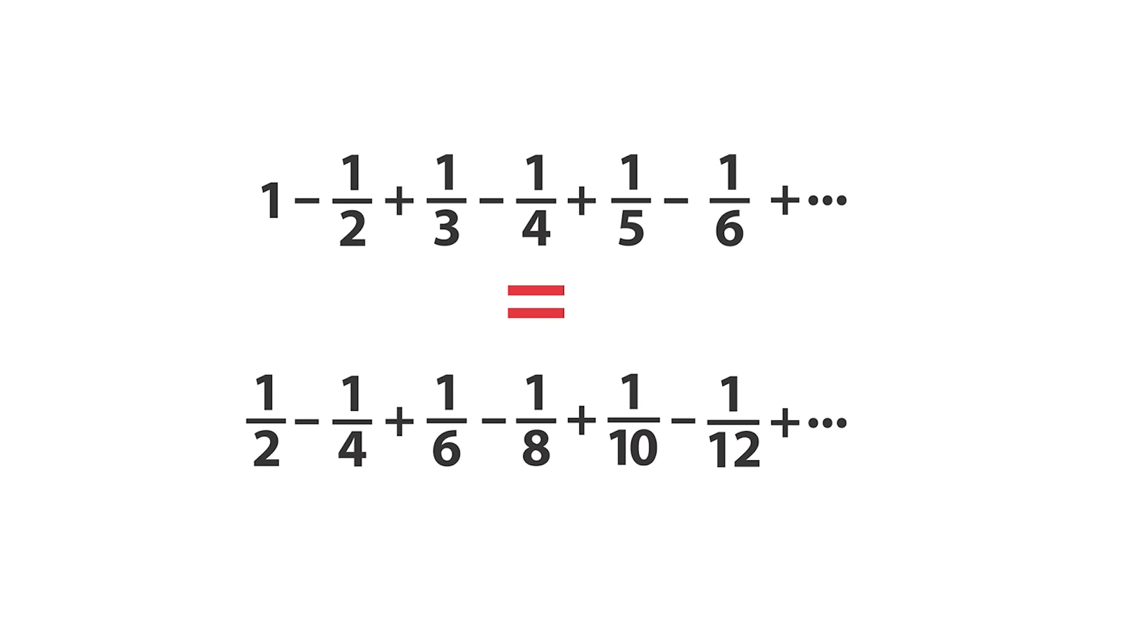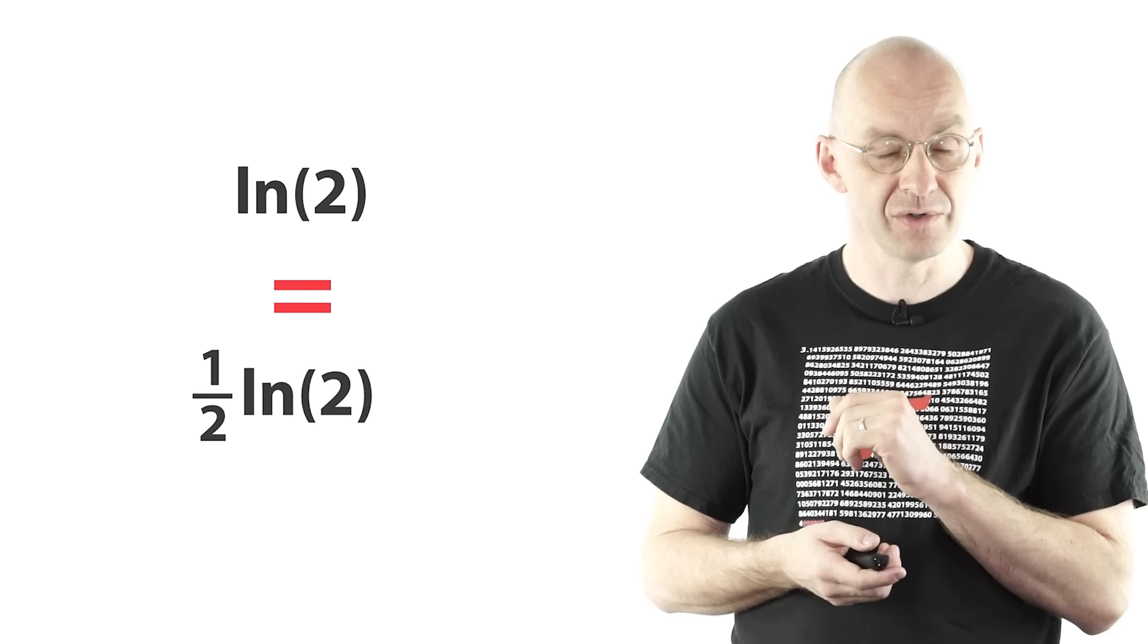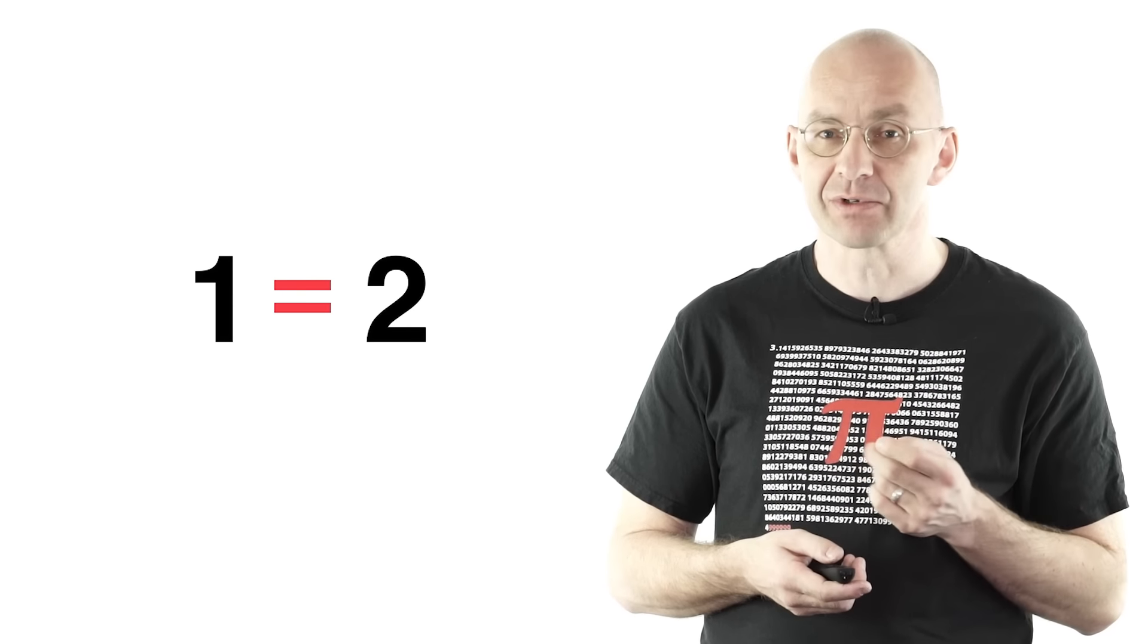The bit that we started with is log 2. But now we can compare term by term. 1/2 of 1 is 1/2, 1/2 of 1/2 is 1/4, and 1/2 of 1/3 is 1/6 and so on. So term by term, the bit at the bottom here is always 1/2 of the bit at the top. So what that means is it should really be equal to 1/2 log 2. Now if you put all the stuff together you get log 2 equals 1/2 log 2, which really amounts to the same thing as saying that 1 equals 2.